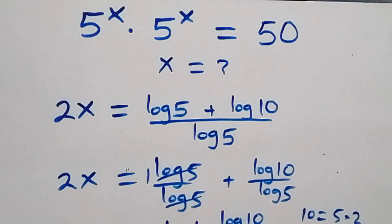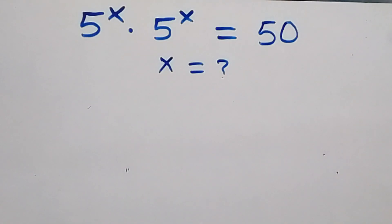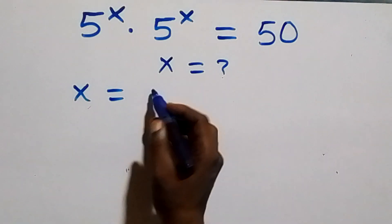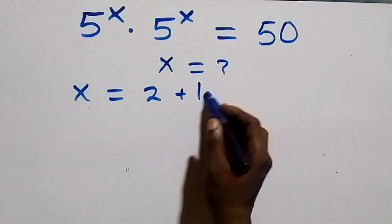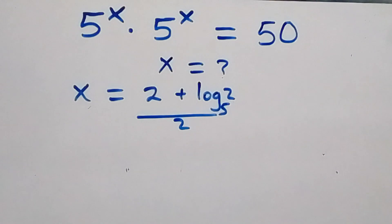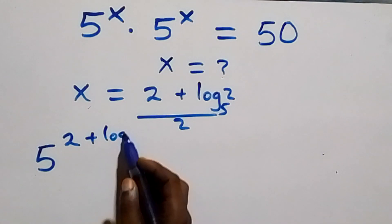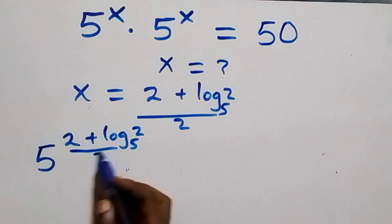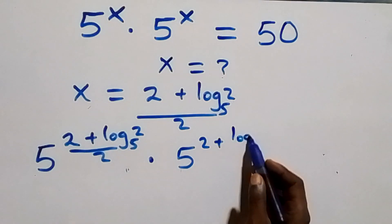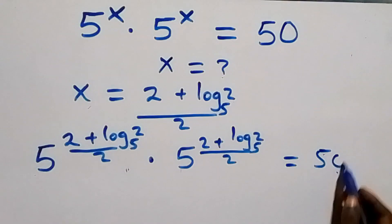Now let's check if this satisfies the original problem. We substitute the value x equals to (2 plus log₅2) over 2 into 5 raised to power x times 5 raised to power x. This gives 5 raised to power (2 plus log₅2 over 2) times 5 raised to power (2 plus log₅2 over 2), which should equal 50.